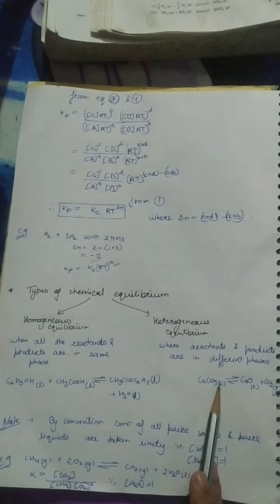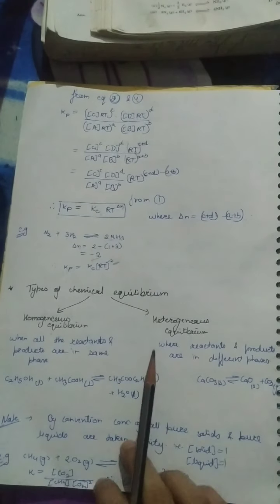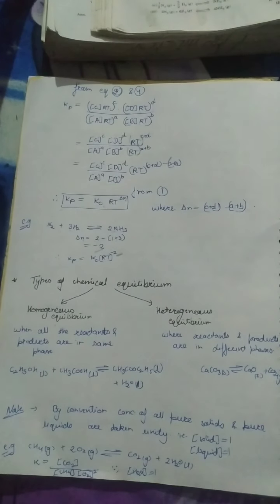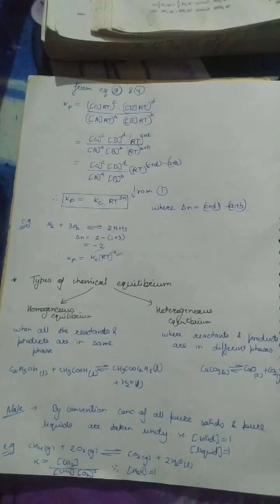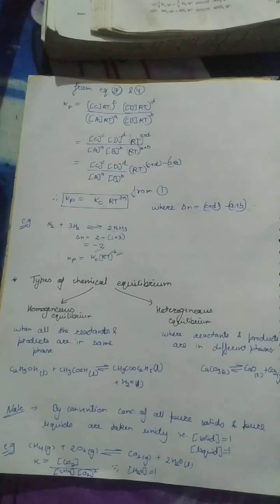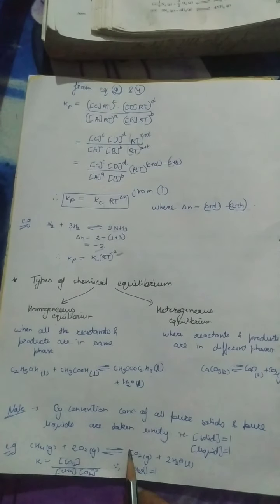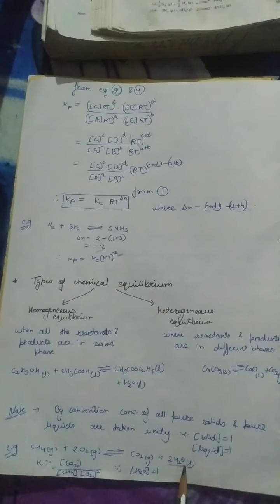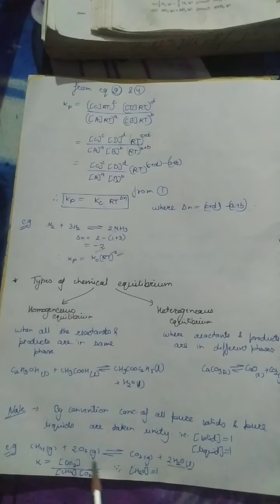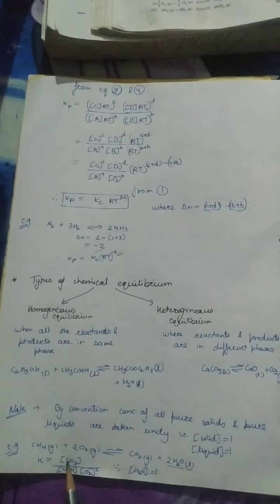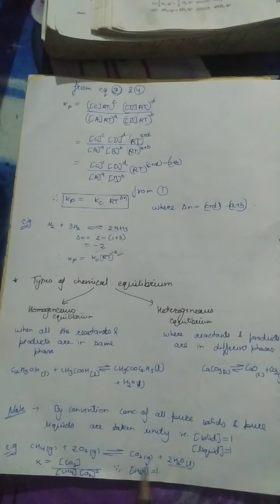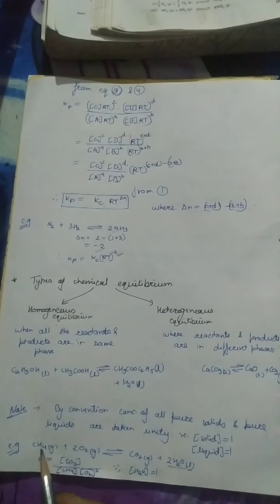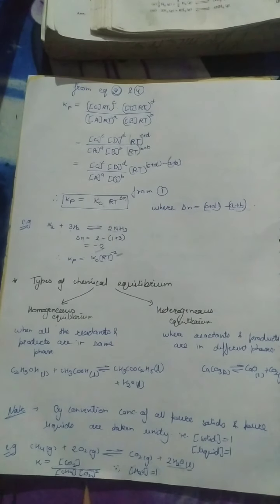For example, calcium carbonate is in solid form while carbon dioxide is in gas form — that is heterogeneous equilibrium. By convention, the concentration of pure solids and pure liquids is always taken as unity (1) and not included in the equilibrium expression. For example, in the combustion of methane where oxygen reacts and carbon dioxide and water are formed, water is in liquid form and is pure, so its concentration is taken as 1. The equilibrium constant expression then includes concentration of CO2 and concentration of O2 raised to the power 2, but not water.